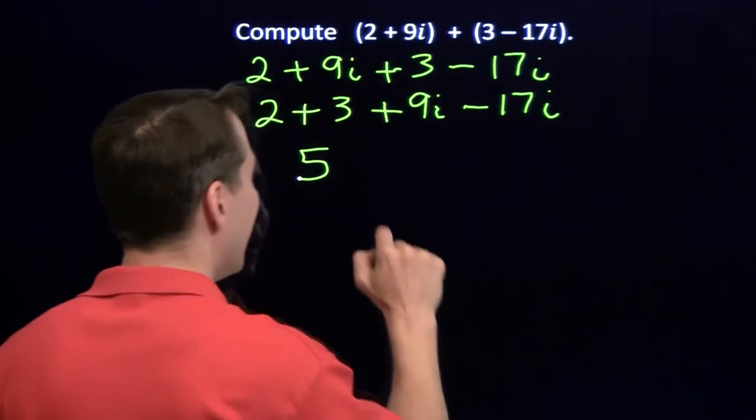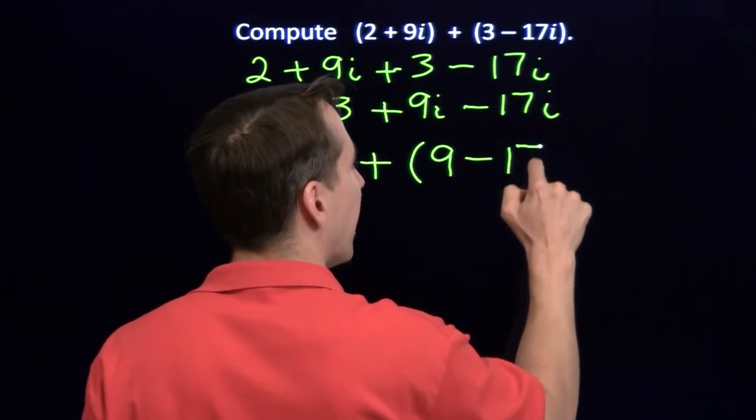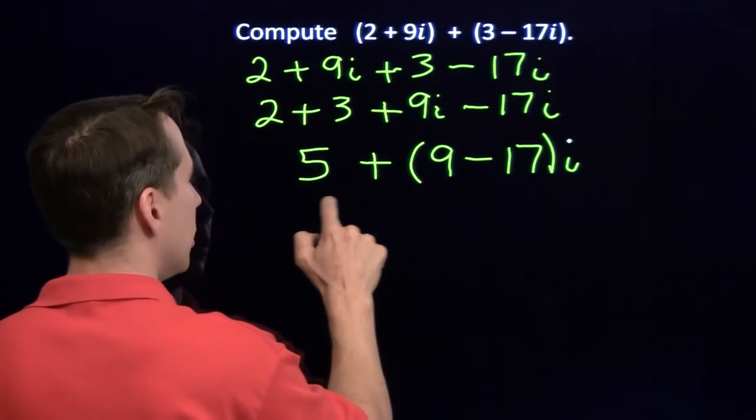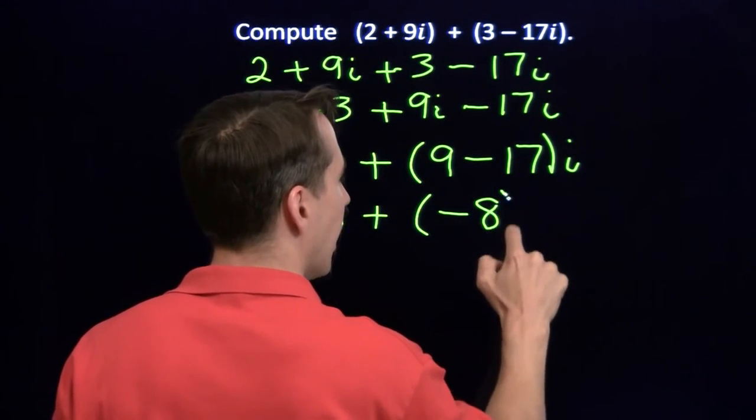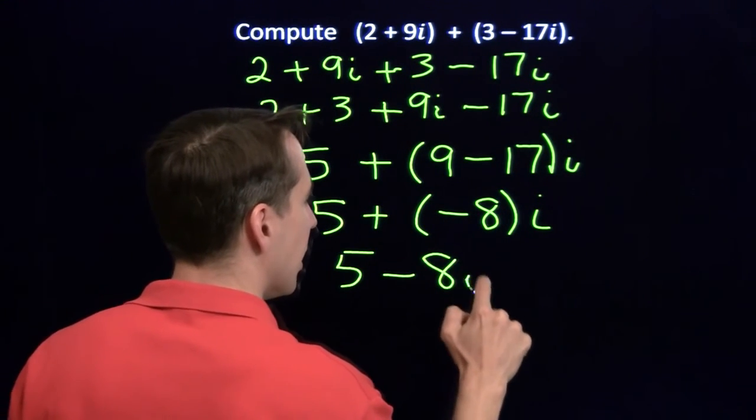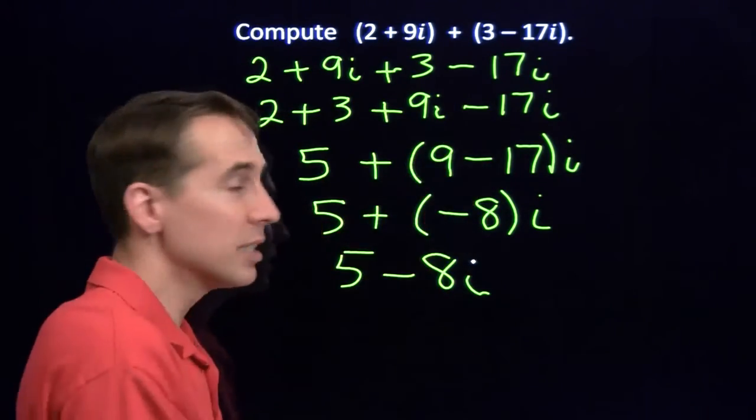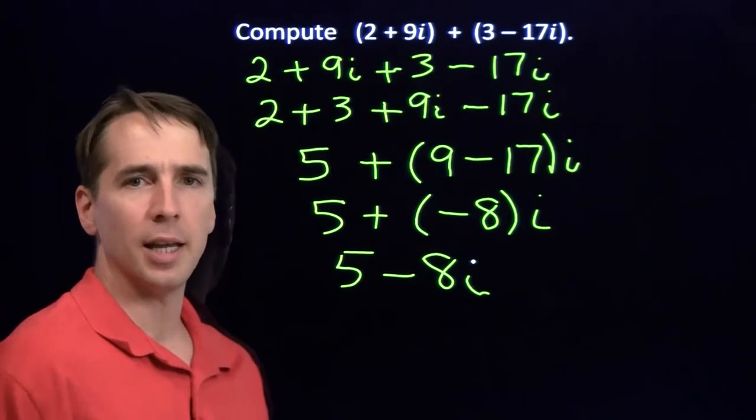We know how to add 9i and minus 17i. Break out a little distributive property, we factor that i out. 9 minus 17 is negative 8, and we have 5 minus 8i. Of course, you probably won't write in all these intermediate steps. You'll see the 9i minus the 17i, and you'll go, aha, minus 8i.